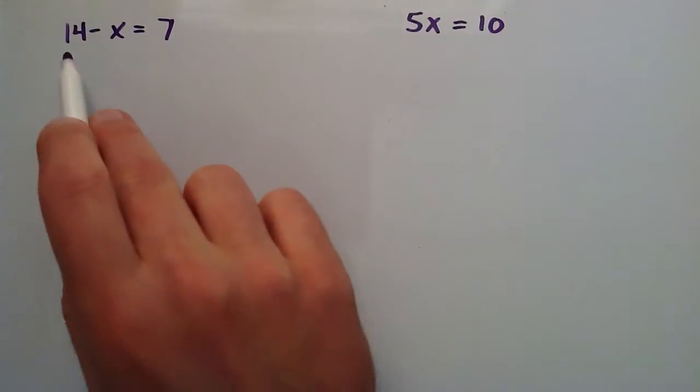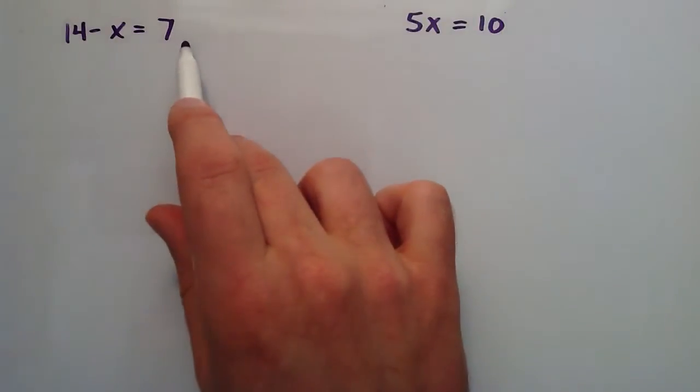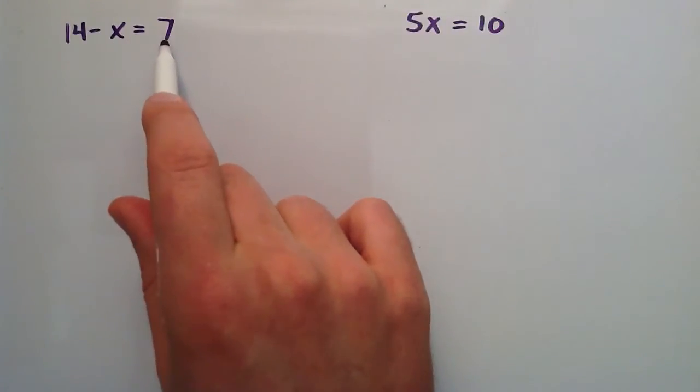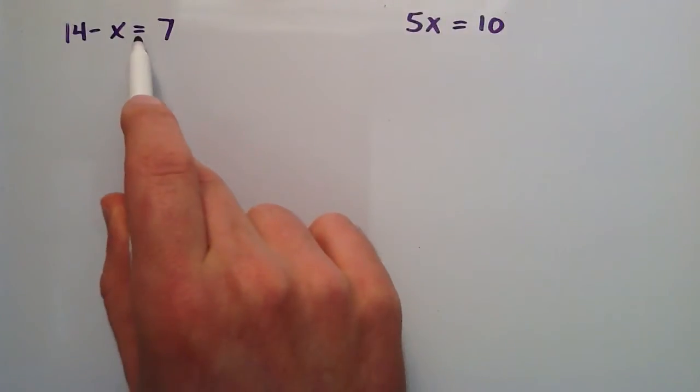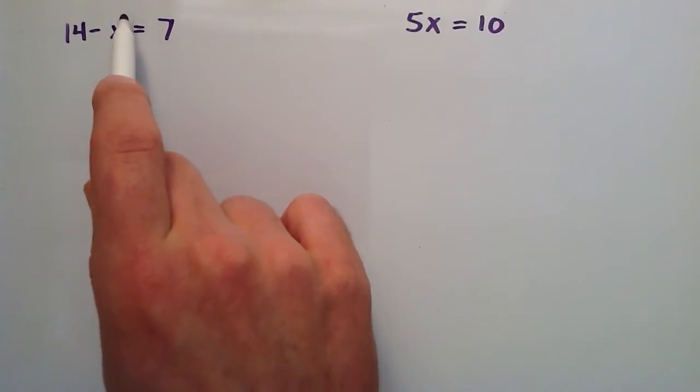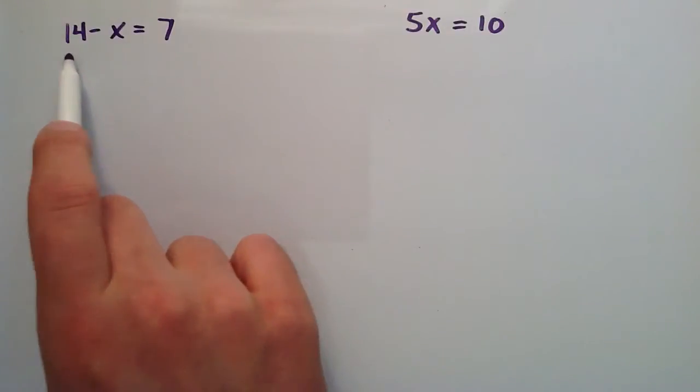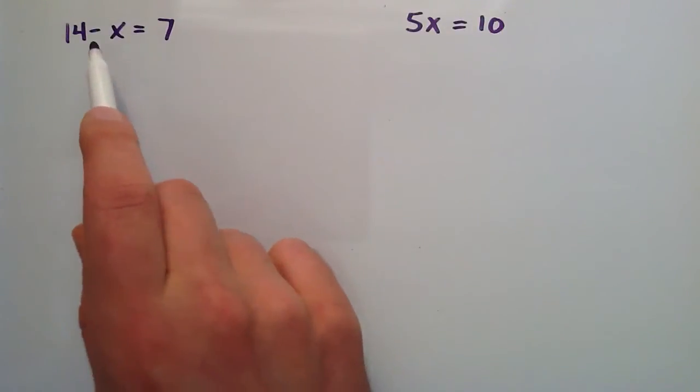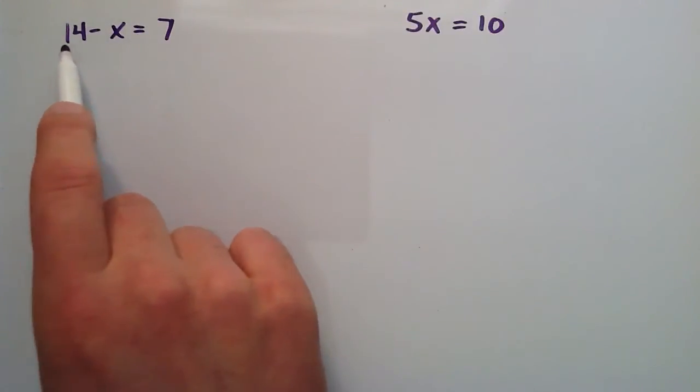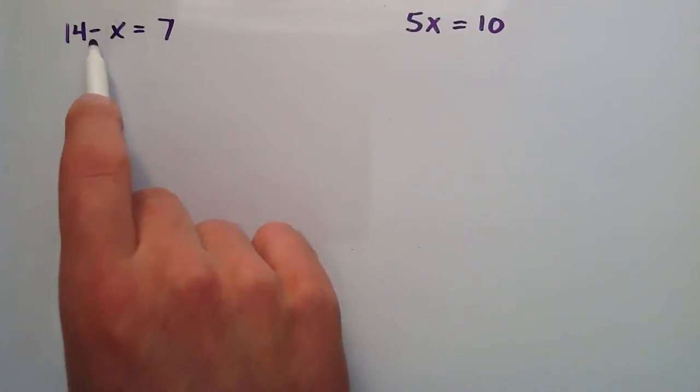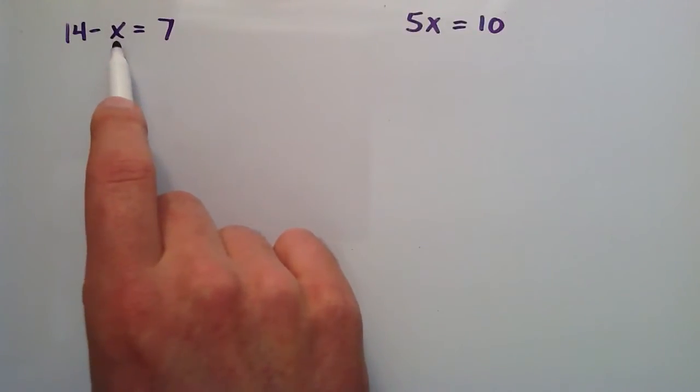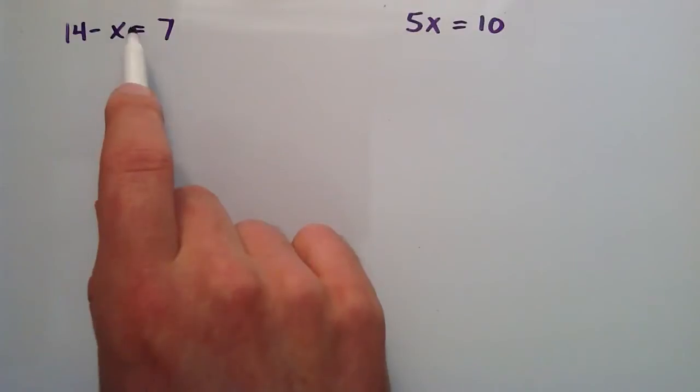The first first degree equation I have is right here, and it says 14 minus x equals 7. This equal sign shouldn't be overlooked. It basically tells us that everything on the right hand side is equal to all the stuff on the left hand side. That means that 14 minus x has the value of 7. In order for this statement to be true, we need to figure out what value x has to be for 14 minus x to equal 7.